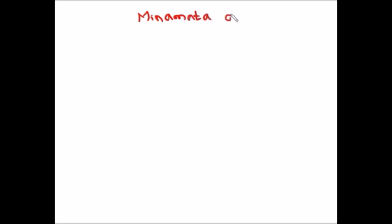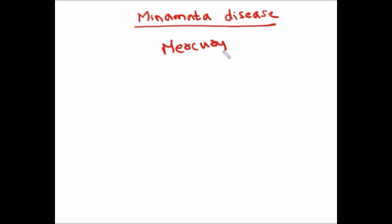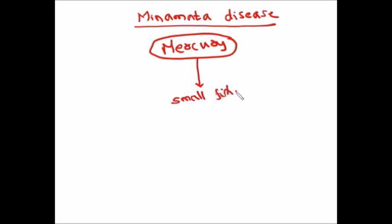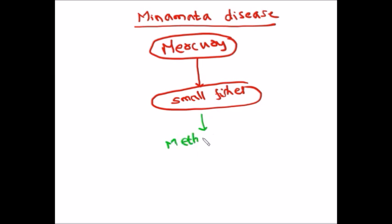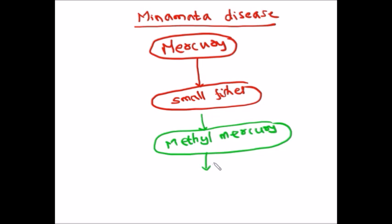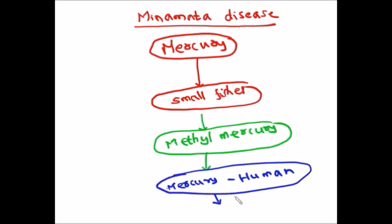Let's understand the concept of Minamata disease. Minamata is a place in Japan where, because of industrialization, mercury was released into the atmosphere and into the water. Mercury reached the water bodies and was taken up by small organisms like small fish. Within the body of small fish, mercury is converted into methylmercury, which can stay in the body for a longer period of time and is deposited in the tissues. When human beings eat these fish, mercury accumulates in the human body, and over time, because of mercury accumulation, a disease developed called Minamata disease.